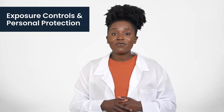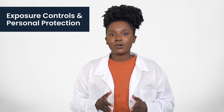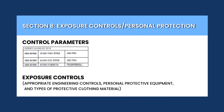Section 8 of the SDS provides important information on how to protect yourself and minimize exposure while handling the chemical. It covers the permissible and recommended levels of exposure from various agencies, as well as recommended engineering controls such as showers, eye wash stations, ventilation systems, or the enclosure of certain chemical processes. This section also includes recommendations for personal protection such as eye and face protection, skin and body protection, respiratory protection, and appropriate hygiene measures.